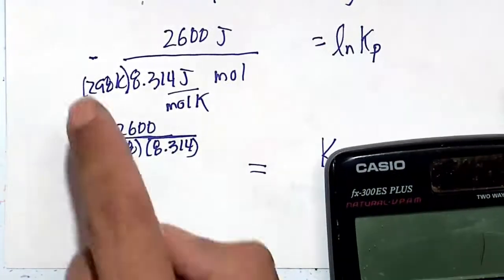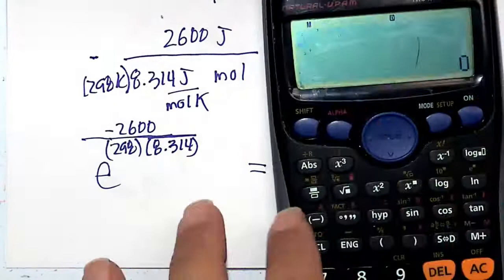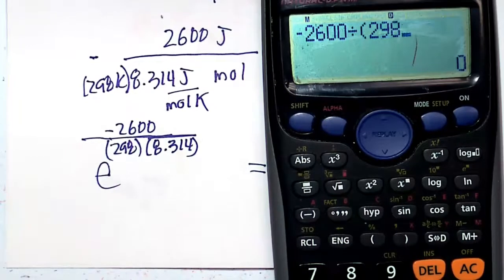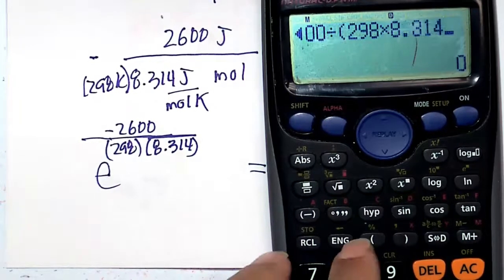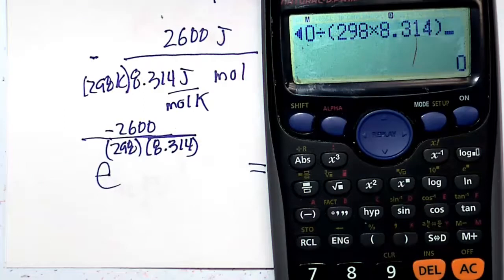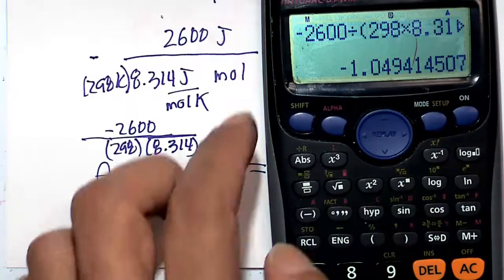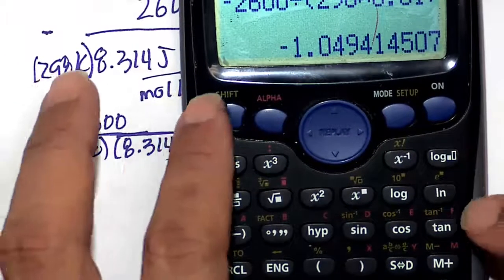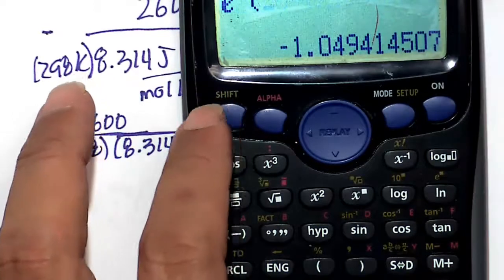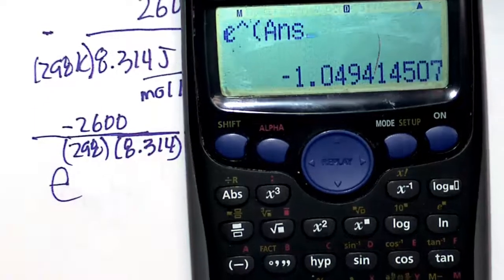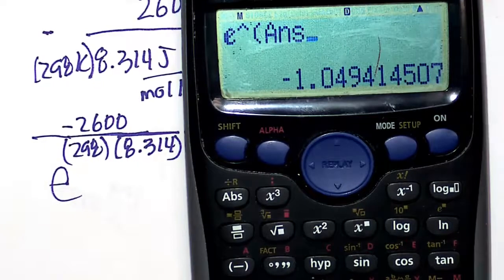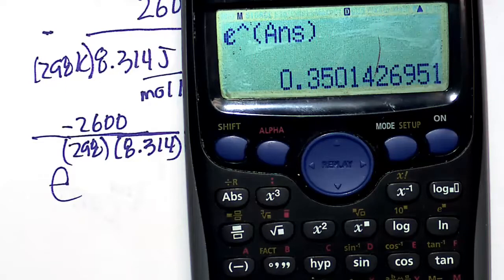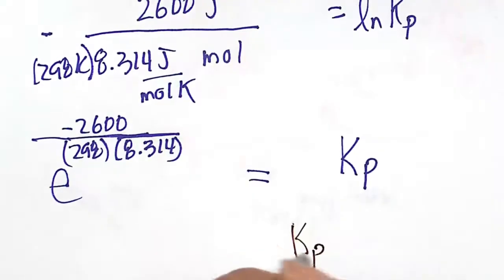So we have minus 2600 divided by parenthesis 298 times 8.314. Again, I'm not really concerned with units. Ks don't have units. So we get that value. We're going to take E to the power of that, so that's the inverse natural log right there. So shift E to the power of my answer, which is that, e to the power of my answer, which is that, close those parenthesis, and getting 0.350 in terms of pressure.